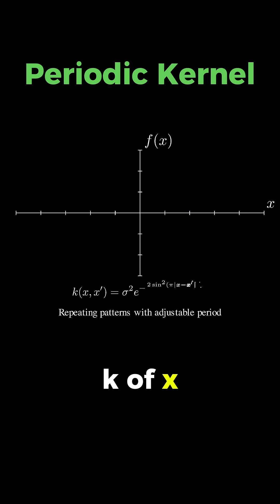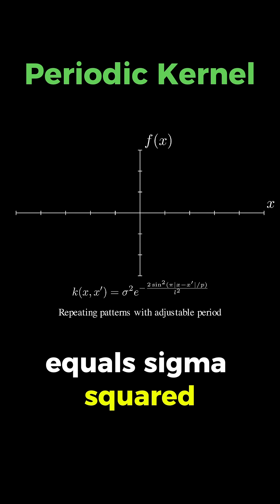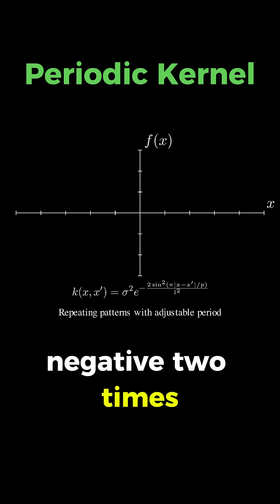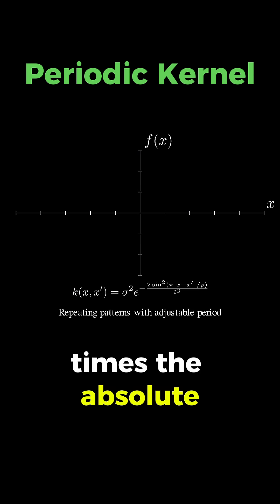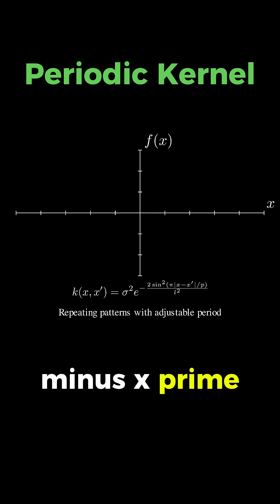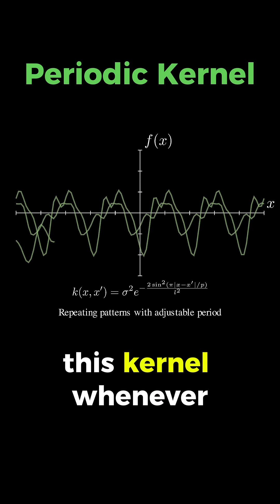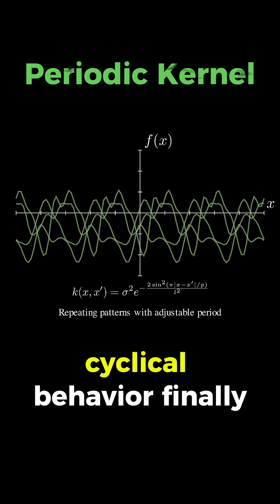The formula is k of x and x' equals sigma squared times e to the negative 2 times sine squared of pi times the absolute values of x minus x' divided by p, all divided by l squared. You will want this kernel whenever your data shows cyclical behavior.